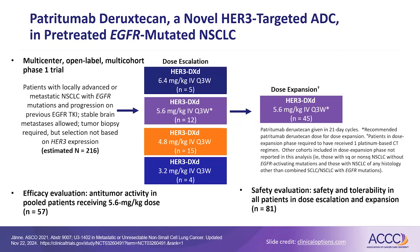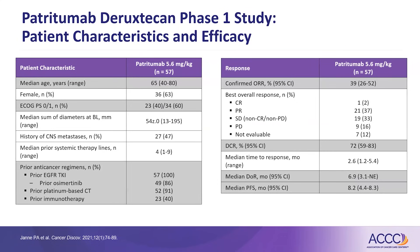There was both an efficacy and a safety cohort. Patient characteristics were what you would typically expect: EGFR-mutated, average age 65, many patients had a history of brain metastases, up to nine prior lines of therapy with a median of four, and everyone received prior TKI as expected. In the recommended phase 2 dosing cohort at 5.6 mg/kg, the confirmed response rate was 39%, mostly partial responses, with a disease control rate of 72%. Median time to response was 2.6 months, duration of response 6.9 months, and PFS 8.2 months.